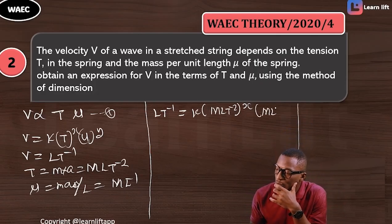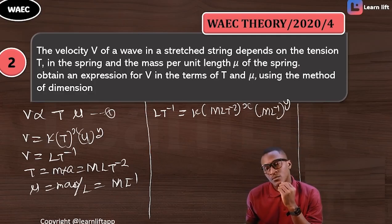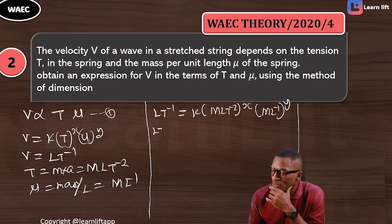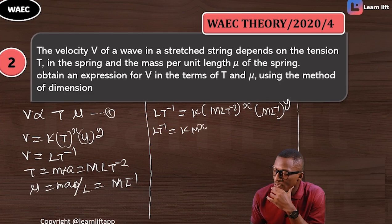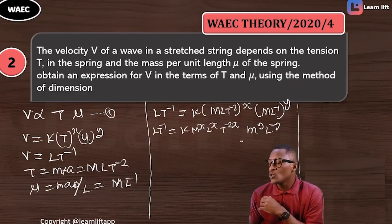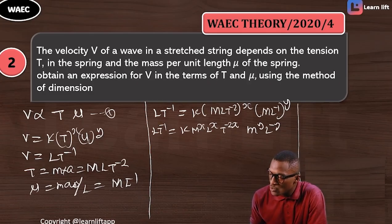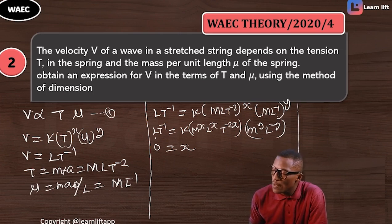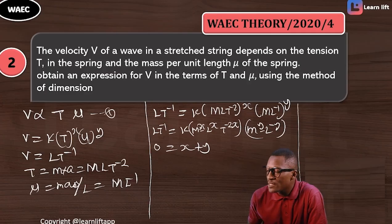Expanding the right-hand side: LT⁻¹ = k · M^x · L^x · T^(−2x) · M^y · L^(−y). Now we equate the powers. There is no M on the left-hand side, so for M: the power of M on the left is zero, which equals x + y on the right. Therefore x + y = 0, meaning x = −y.